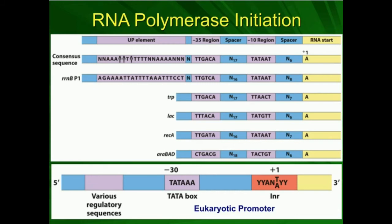In prokaryotes, the sigma factor binds to these specific regions of DNA — specifically to the minus 35 region and the minus 10 region. That's very important because the sigma factor is ultimately what allows RNA polymerase to bind. If the minus 10 and minus 35 regions were mutated significantly, the sigma factor may not be able to bind, and RNA polymerase activity would be eliminated. The sigma factor binds to minus 35 and minus 10.